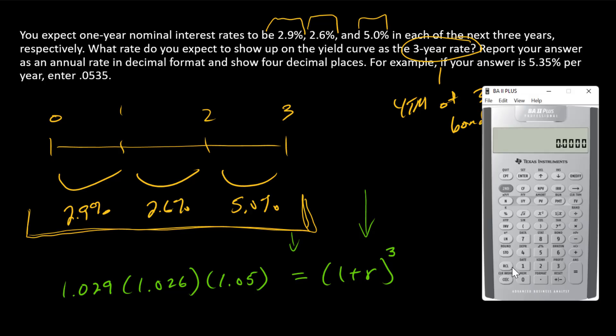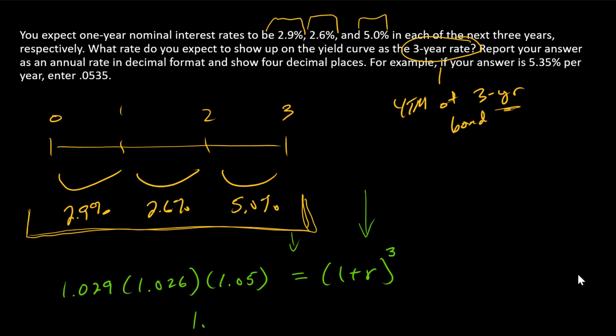Now all we have to do is the math on the left. I'll multiply this out: 1.029 × 1.026 × 1.05. That equals 1.1085. I'll write this down as a rounded number and leave the unrounded value in my calculator.